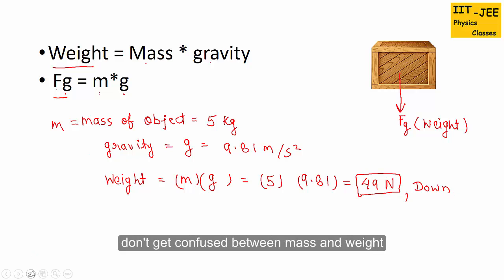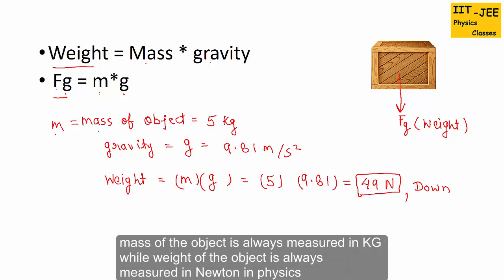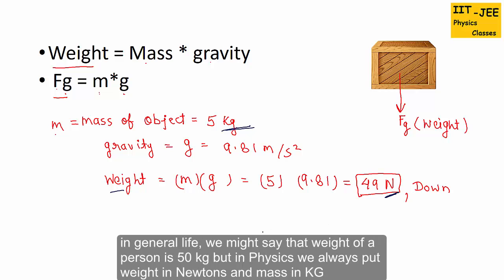Don't get confused between mass and weight. Mass of the object is always measured in kg, while weight of the object is always measured in Newtons in physics. In general life we might say that weight of a person is 50 kg, but in physics we always put weight in Newtons and mass in kg.